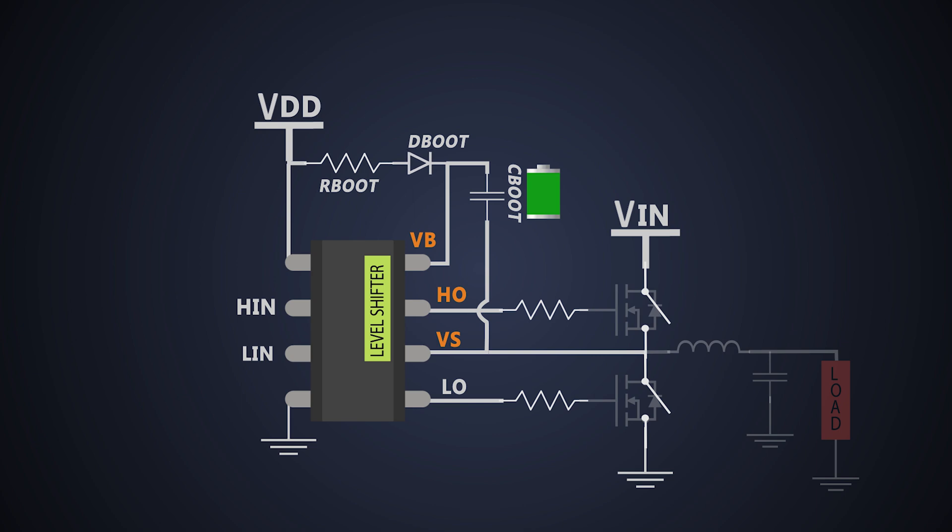After this, the high side switch tries to turn on. Here we check this MOSFET. How? While the capacitor is charged up to VDD, let's say 12V.